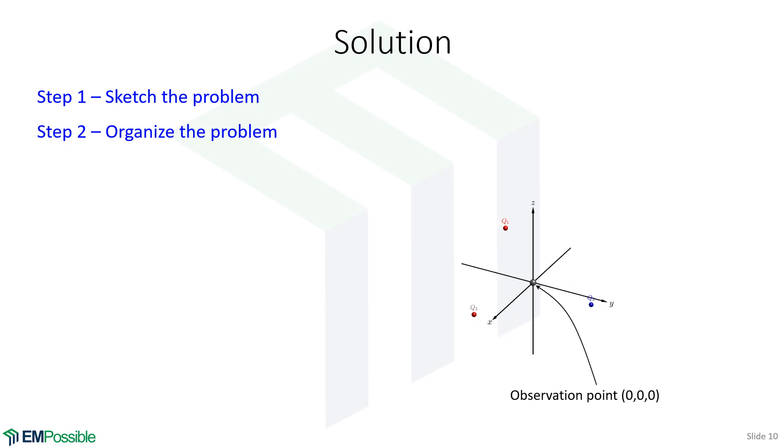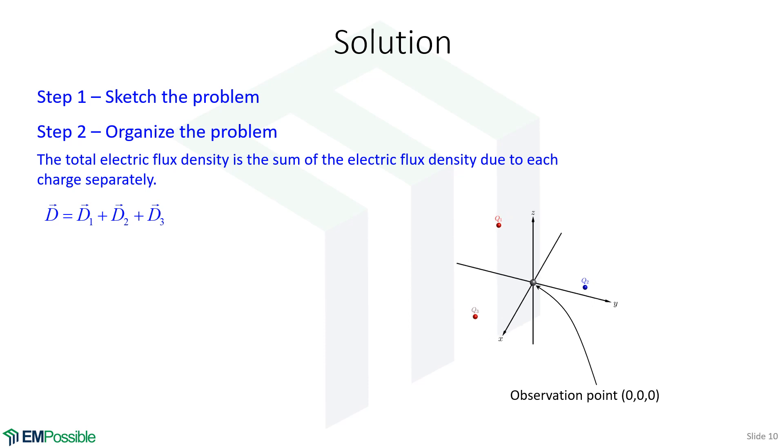I like to first organize the problem. How am I going to solve it? If I know ahead of time I'm going to have to solve D1, D2, D3, and I jump straight into that, I feel like I can lose myself. So let's start at a high level. The overall electric flux density is going to be the sum of the electric flux density if there was only the first charge in this problem. D2 is the electric flux if only the second charge were in the problem, and D3 is the electric flux if only the third charge were in the problem. So we will calculate these one at a time, add them together, and then we'll have the overall electric flux density.